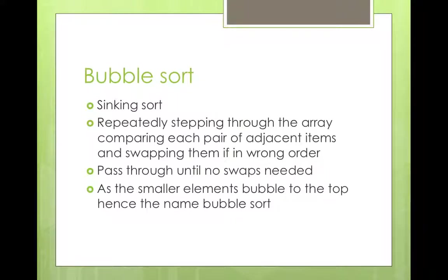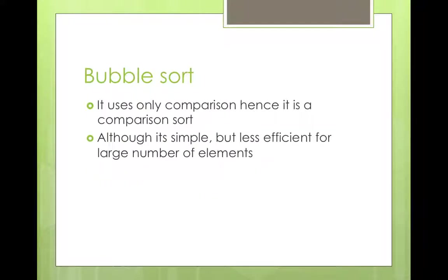Bubble sort is also known as sinking sort. In bubble sort we repeatedly step through the array, comparing each pair of adjacent items and swapping them if they are in the wrong order. We pass through until no swaps are needed, meaning the array is sorted, as smaller elements bubble to the top — hence the name bubble sort. It uses only comparisons, so it is a comparison sort. Although it's simple, it is less efficient for large numbers of elements.